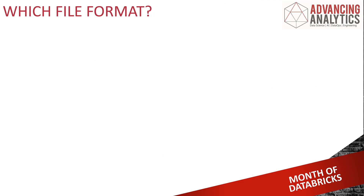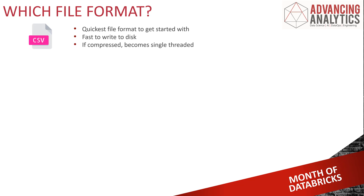Everyone starts in the same place: the humble, noble CSV format. It's really quick to get started with — you can take an Excel file, save it as a CSV, throw it into a lake, and it'll work quite well. It can chunk up into lots of different segments and read bunches of rows at a time, meaning you can get a huge amount of parallelism. If it's compressed, it becomes single threaded, which is no good. It also has limitations: it can't handle all data types or complex data types very nicely.